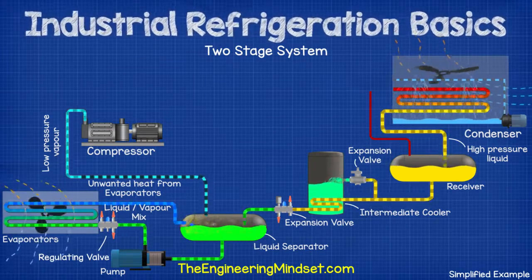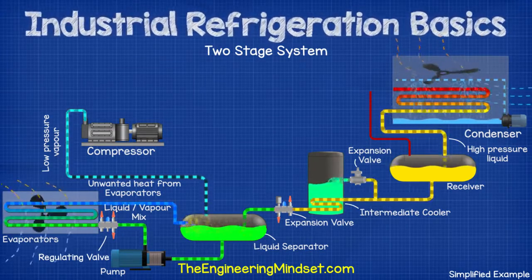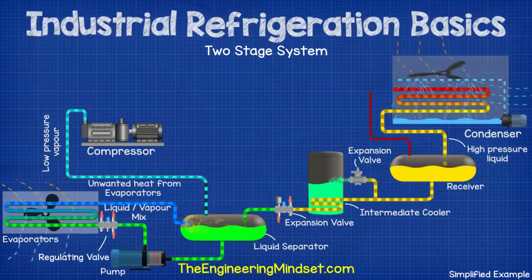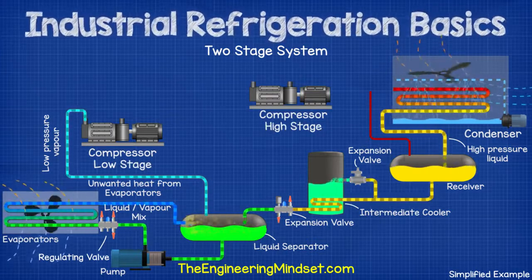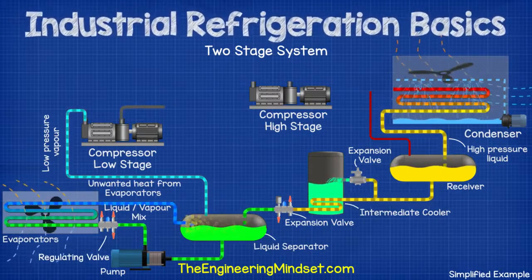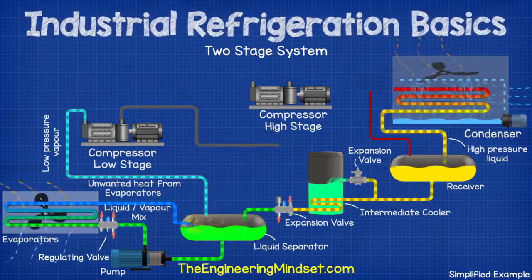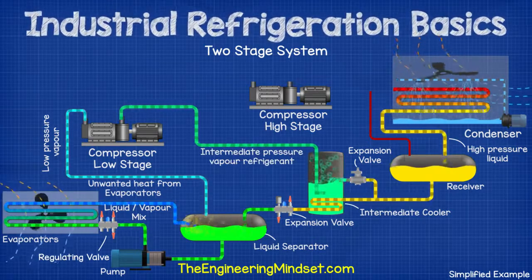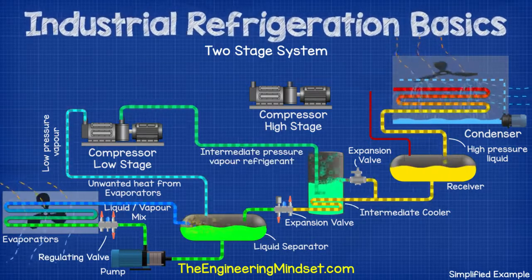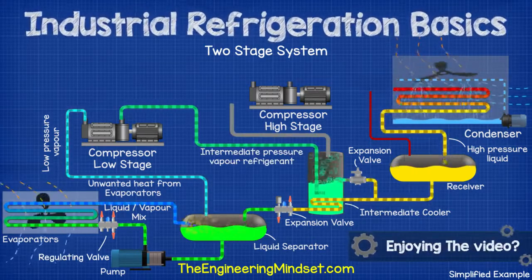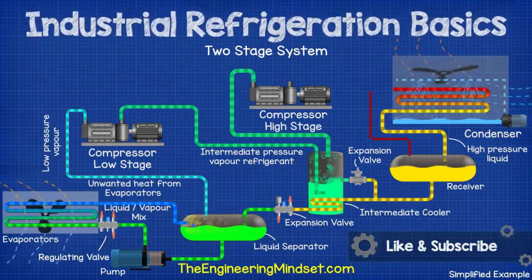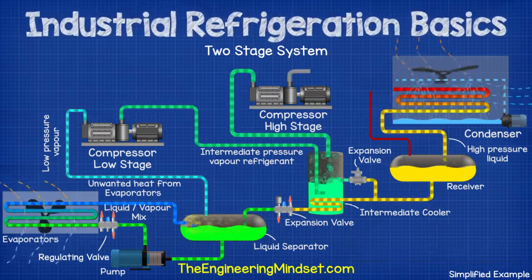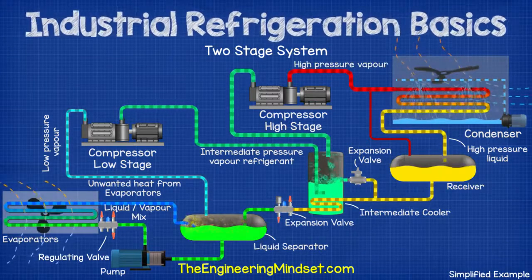The vapor refrigerant being sucked out of the separator still flows to a compressor, but this time we have two compressors. The refrigerant therefore flows to the low stage or booster compressor to increase the pressure. From here it flows and is released into the intermediate cooler, which helps to condense the refrigerant. The vapor refrigerant is sucked out of the intermediate cooler and flows to the high stage compressor, where it will then flow back into the condenser to repeat the entire cycle.